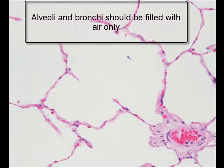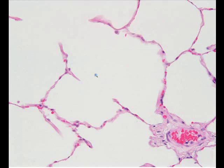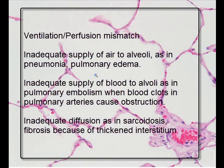Similarly, the walls of the alveoli should not be any thicker than normal — if they are thicker, it is abnormal. Most abnormalities will be visible under the microscope; some have distinct features to specifically identify a condition, while others are indistinct but still point towards a group of conditions. Any abnormality within lung parenchyma will cause ventilation-perfusion mismatch because of inadequate ventilation, inadequate perfusion, or inadequate diffusion.